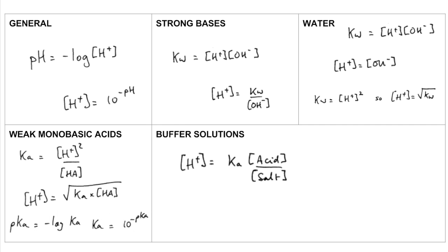Multiplied by the acid concentration divided by the salt concentration. So H plus concentration for a buffer is equal to KA over salt is how I get my students to remember that.